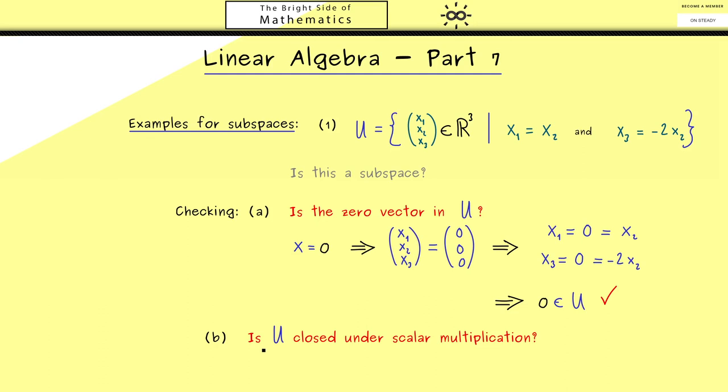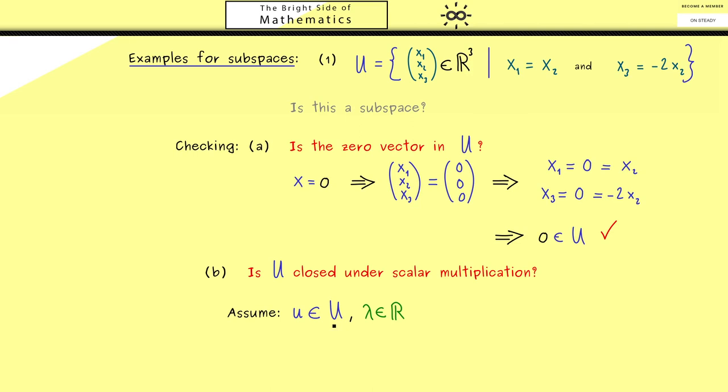Now the second one is about scalar multiplication. In a rough way, we can formulate the second question as: is U closed under scalar multiplication? It shouldn't be possible to leave the set U just by scaling vectors. Therefore, the starting point is a vector in U and a scalar λ. If we want to show this property, we have to go with an arbitrary vector u in U and an arbitrary scalar λ. Our vector u should have three components: u₁, u₂, u₃. Then we can immediately conclude that the two equations from above are satisfied for these components. In other words, u₁ is equal to u₂, and u₃ is equal to minus 2u₂.